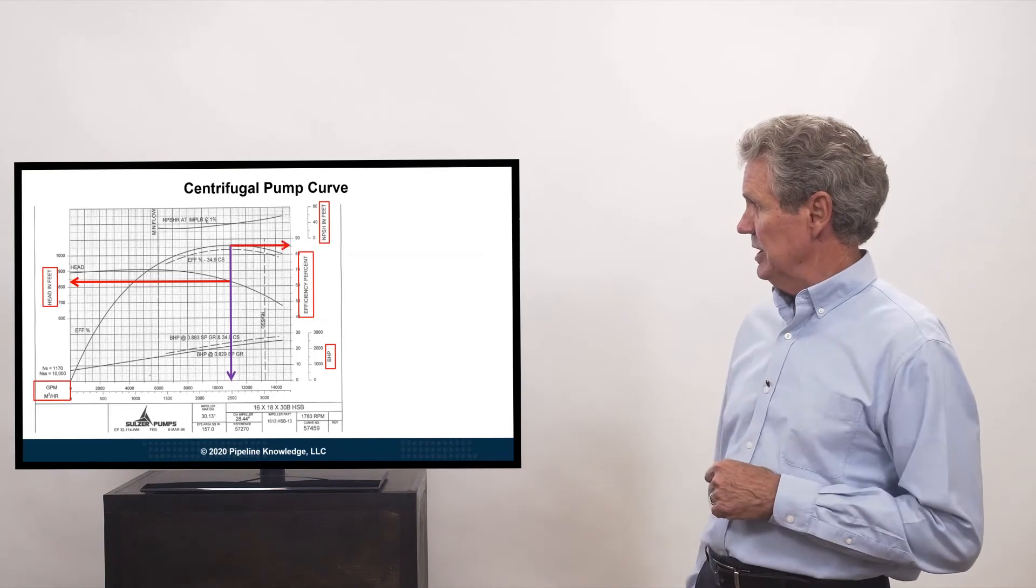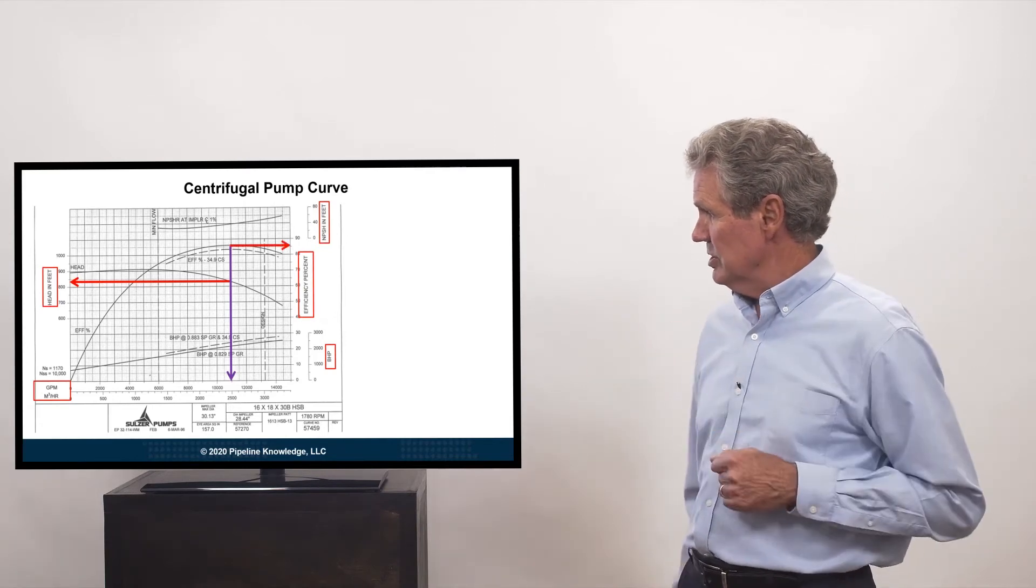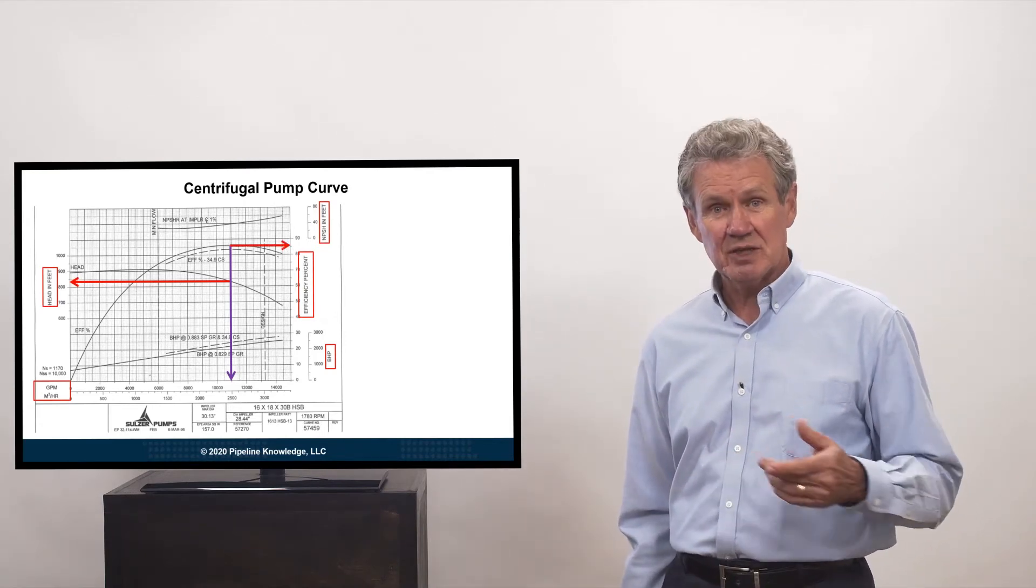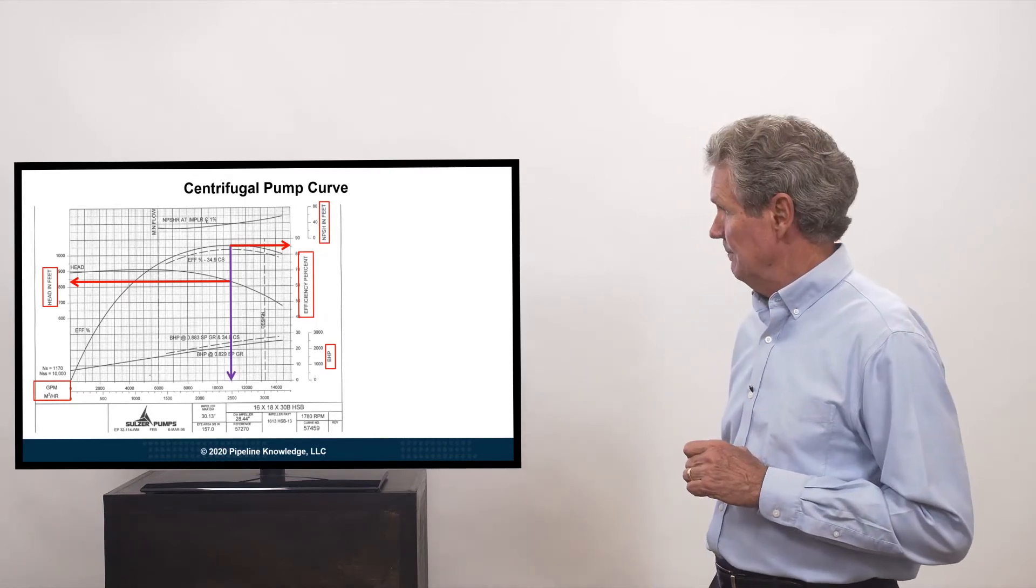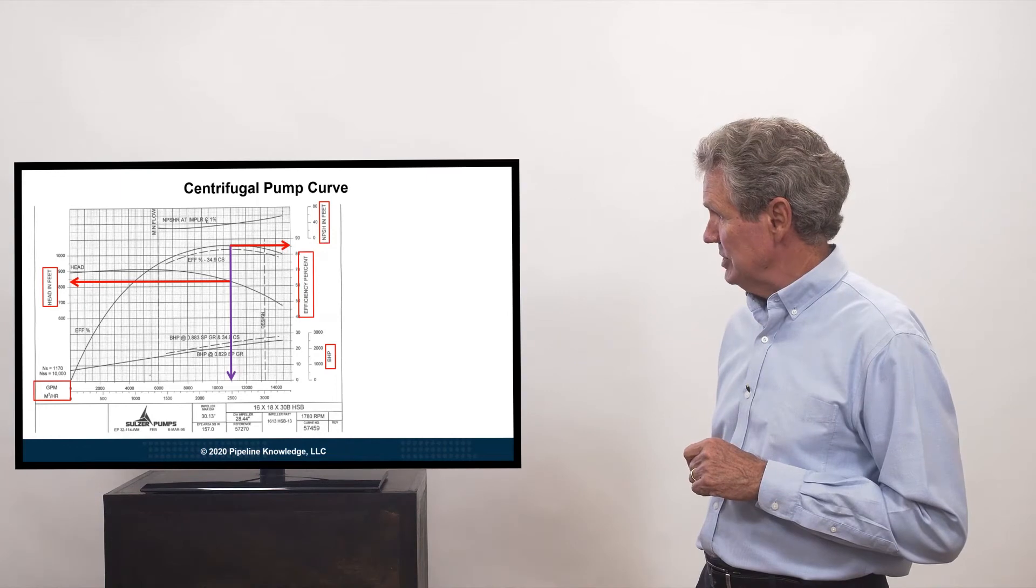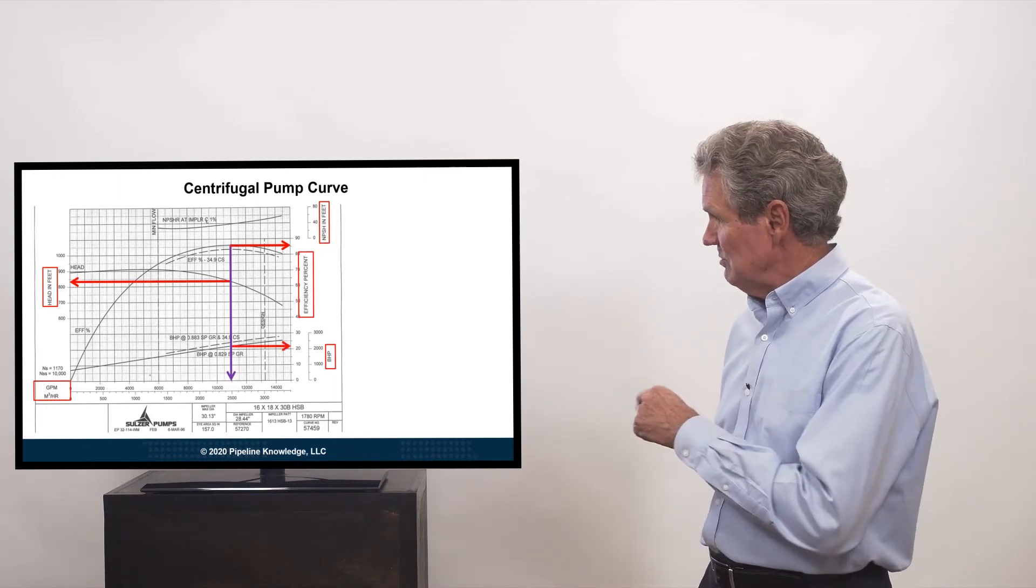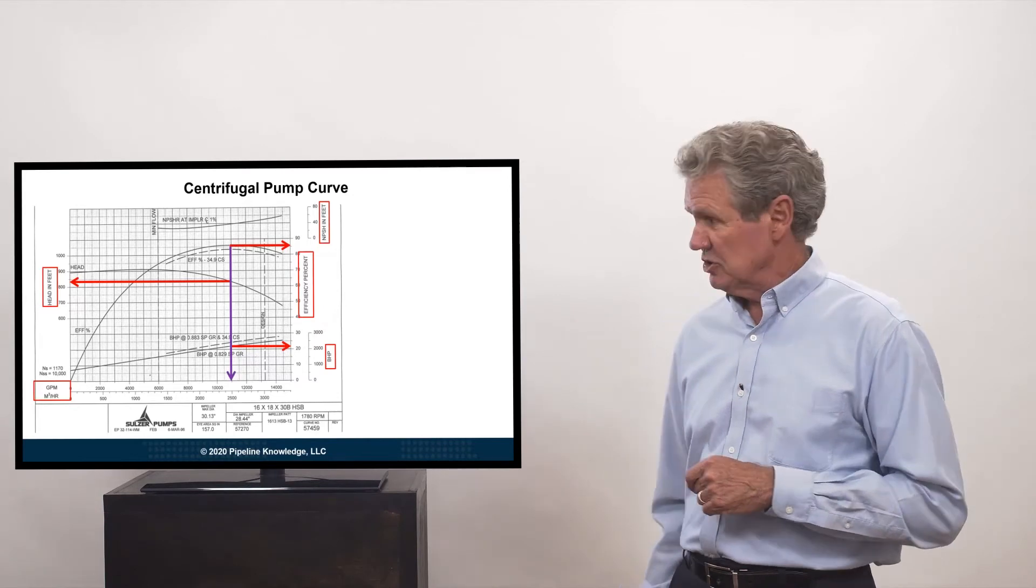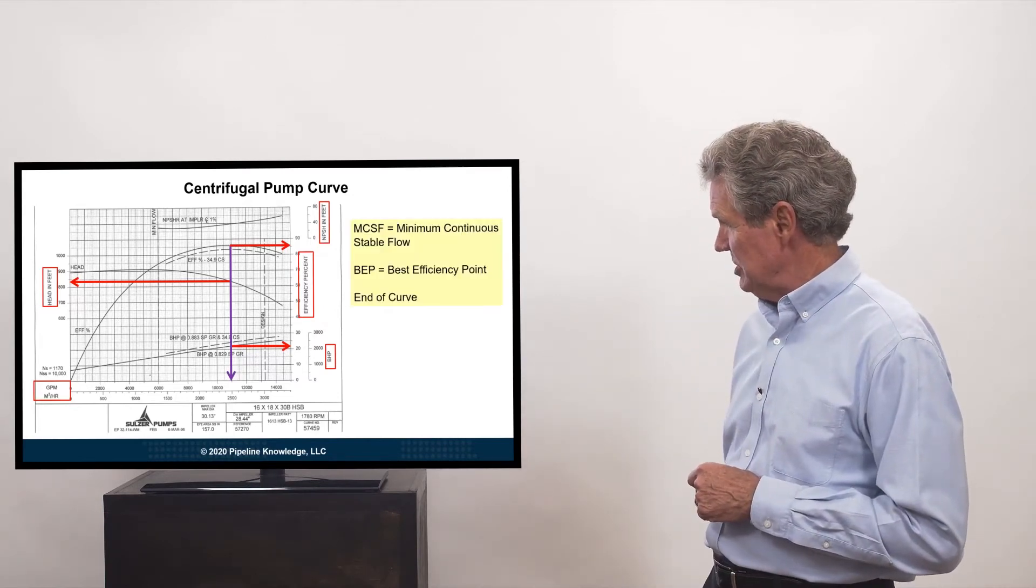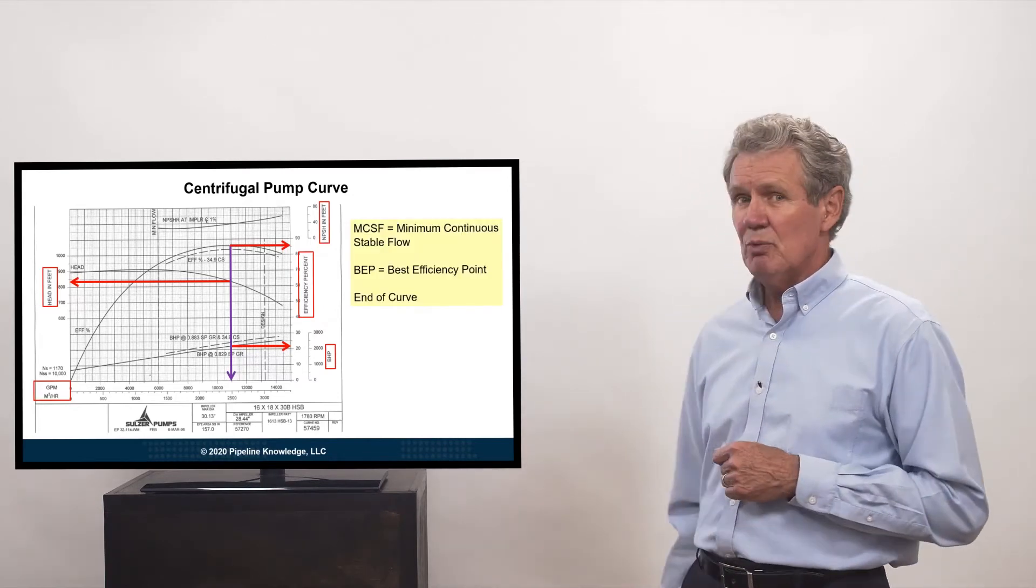Reading up the purple arrow, then, we can read across to the efficiency curve. It tells us what the efficiency is at that particular rate and that particular pressure. And then, we can also read over to what the brake horsepower is. A lot of interesting information here.